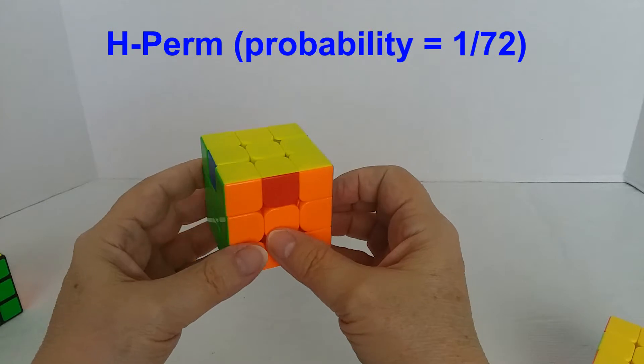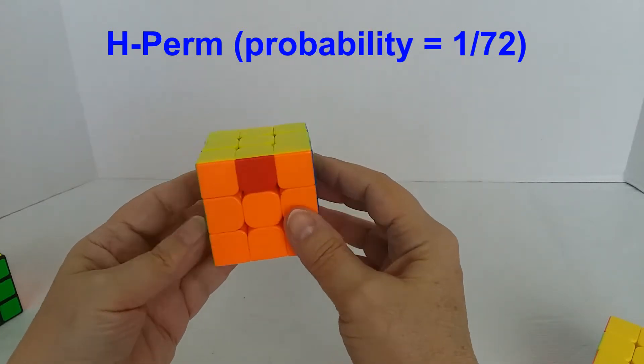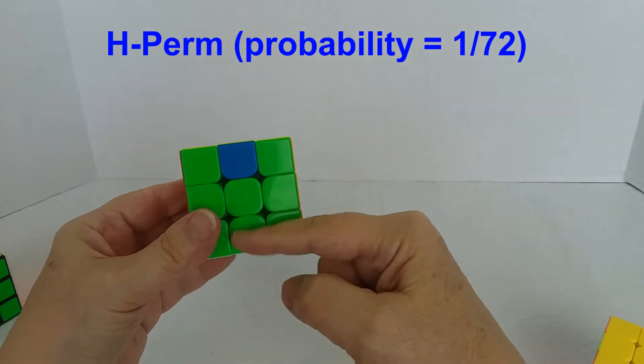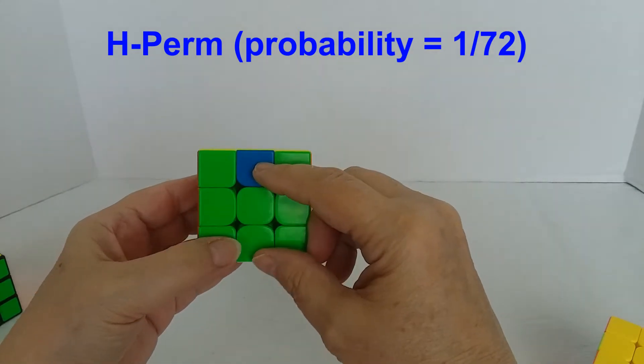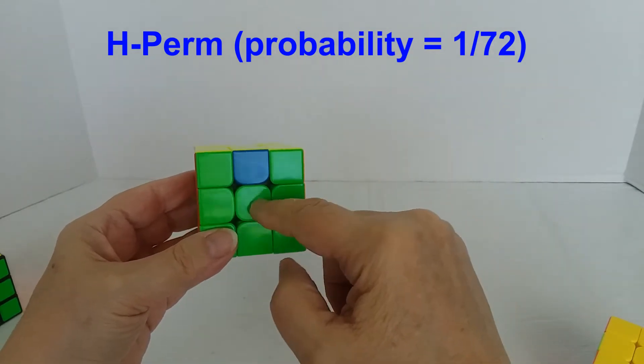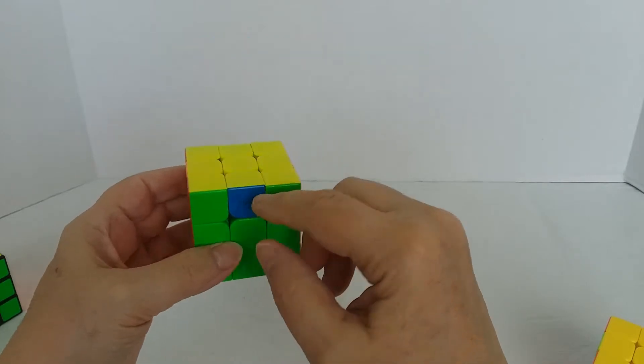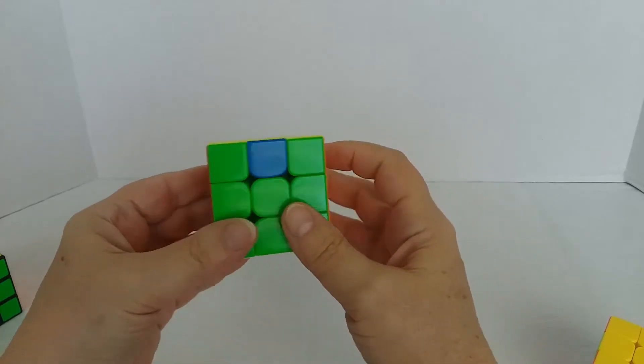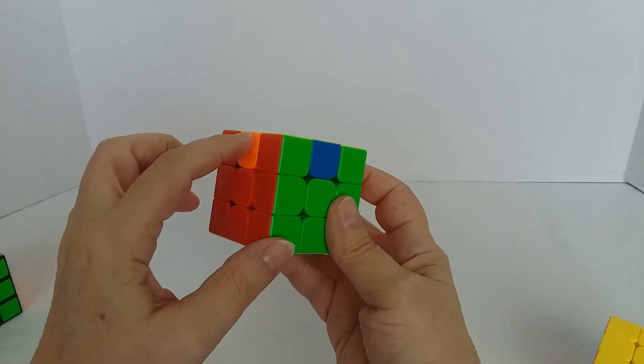This case is the H perm, I believe. It's where on each side we have the opposite edges that belong on that side. So this is the green side and we have the opposite color which is blue. On the blue side we have green. And similarly on the orange we have red, and on the red we have orange.